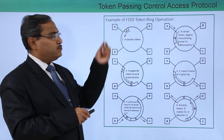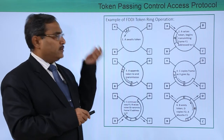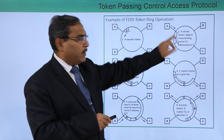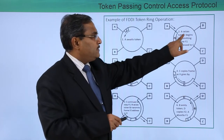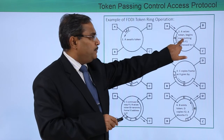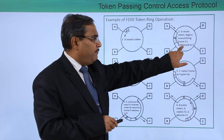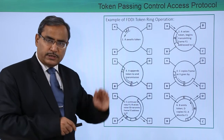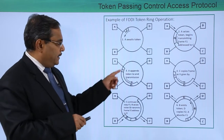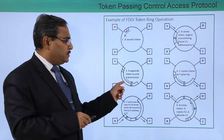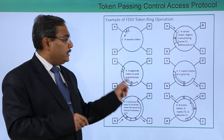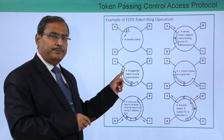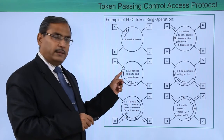What will happen? A will seize the token and A will transmit, sending the frame F1. A seizes the token and begins transmitting frame F1 addressed to C. This frame is now in transmission. When the transmission of this frame is completed, A will append the token at the back of the frame.